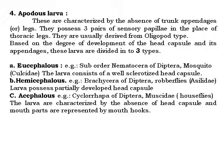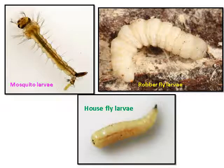Apodous larvae are characterized by the absence of a head capsule; the mouth parts are represented by only mouth hooks. This type has no legs or very limited development. This characteristic is found mostly in Diptera — even the mosquito larva is of this type. Examples include mosquito larvae with somewhat greater development, rubber fly larvae having only a small hook-like structure, and housefly larvae also having a small black-colored hook as a mouth part.